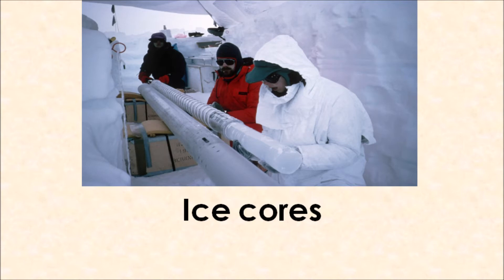Each year, each layer of snow added to these mountain glaciers or ice sheets traps gases from the atmosphere that the snow fell through. Gradually the layers turn to ice, and over thousands of years these layers have built up and are now thousands of metres thick. By drilling down into the ice, scientists can extract older and older ice cores — the further down you drill, the older the ice is. Scientists then take these ice cores and do a chemical analysis of the various ice layers as well as the gases they contain.